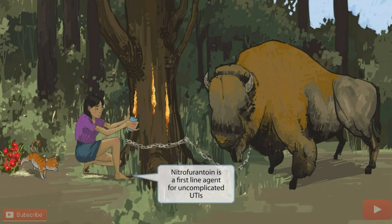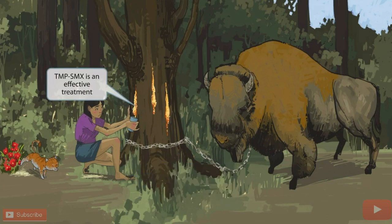Now let's talk about treatment. Notice that we've shown our attractive young cartoon girl with hairy or furry toes. Furry toes sounds kind of like nitrofurantoin. We've included this part of the scene to help you remember that an uncomplicated UTI is frequently treated empirically, and nitrofurantoin is one of the first-line agents.